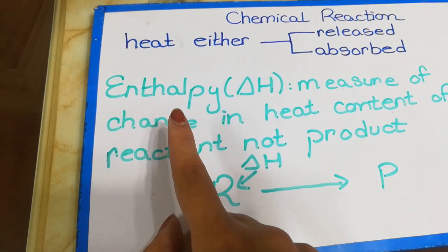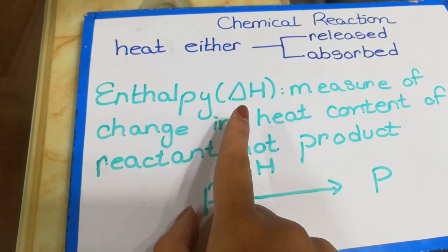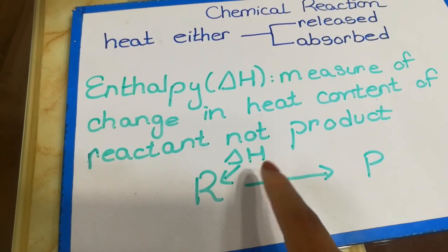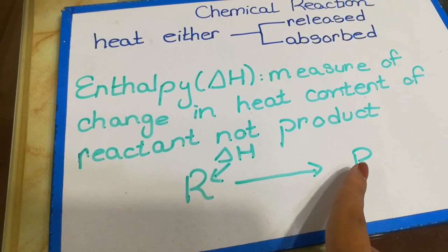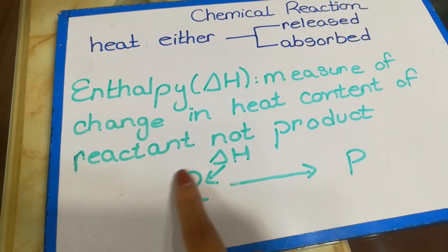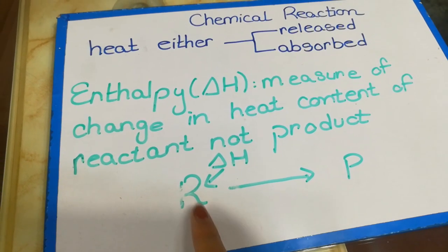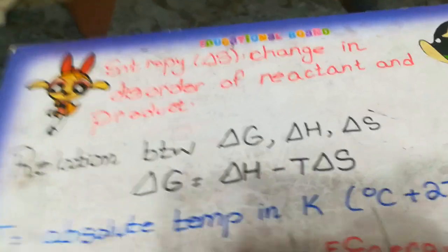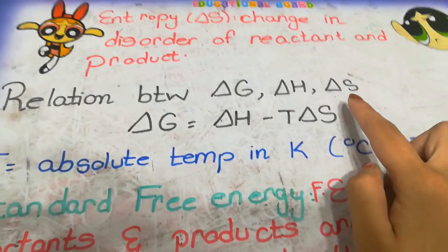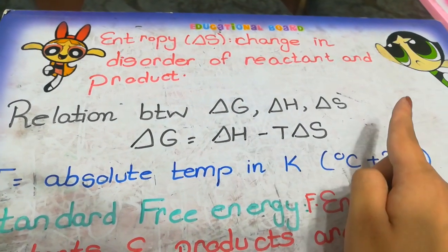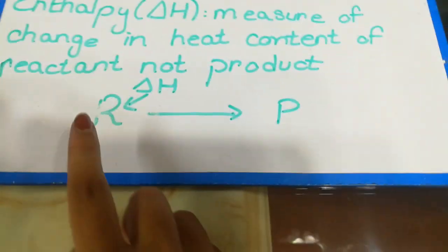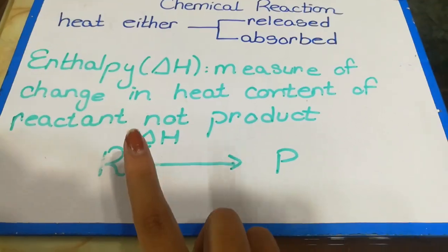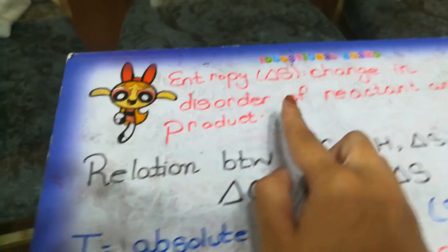Enthalpy is indicated by the letter delta H. It is the measure of how the energy of the reactant is changing. We are not concerned with the heat change that is occurring in the product — whatever change is occurring on the reactant side, that measure of the change of heat is known as enthalpy, not of the product. Entropy is the changes that are occurring in both the reactant as well as the product. If in both the reactant and product there is any disorder or any decrease in heat energy, that is known as entropy, indicated by delta S.